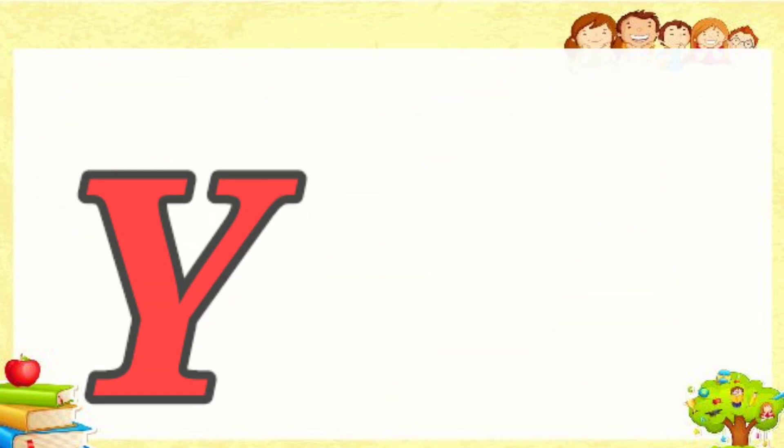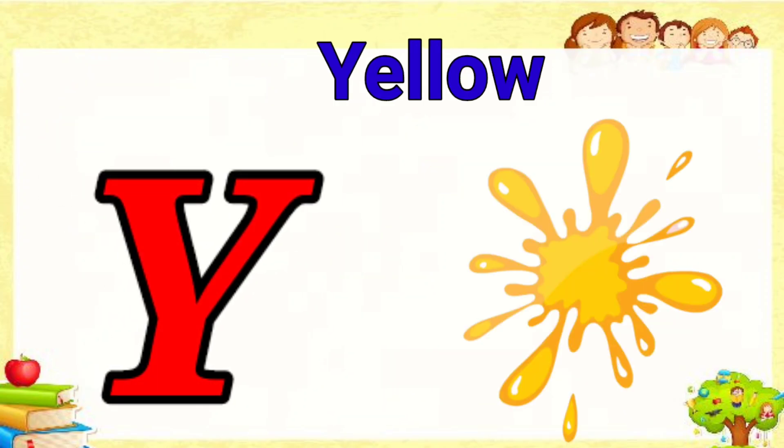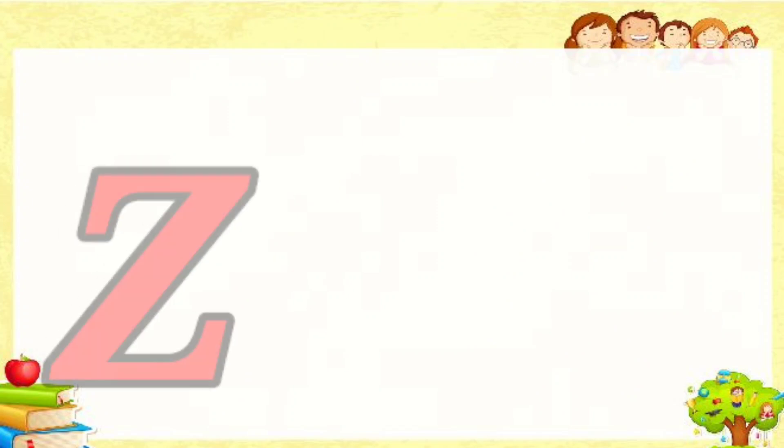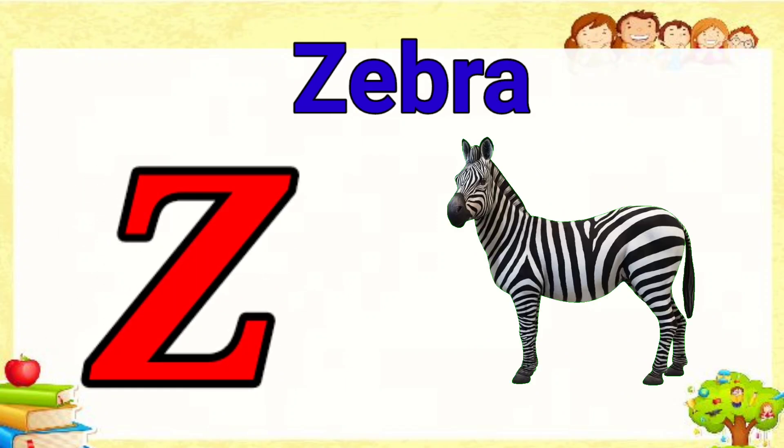Y is for yellow, ye-ye-yellow. Z is for zebra, z-z-zebra.